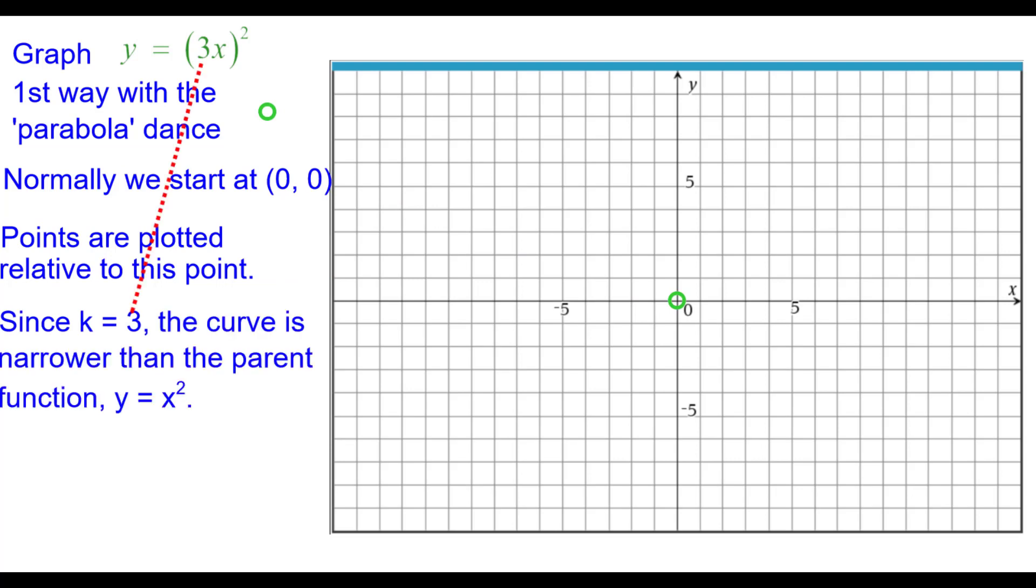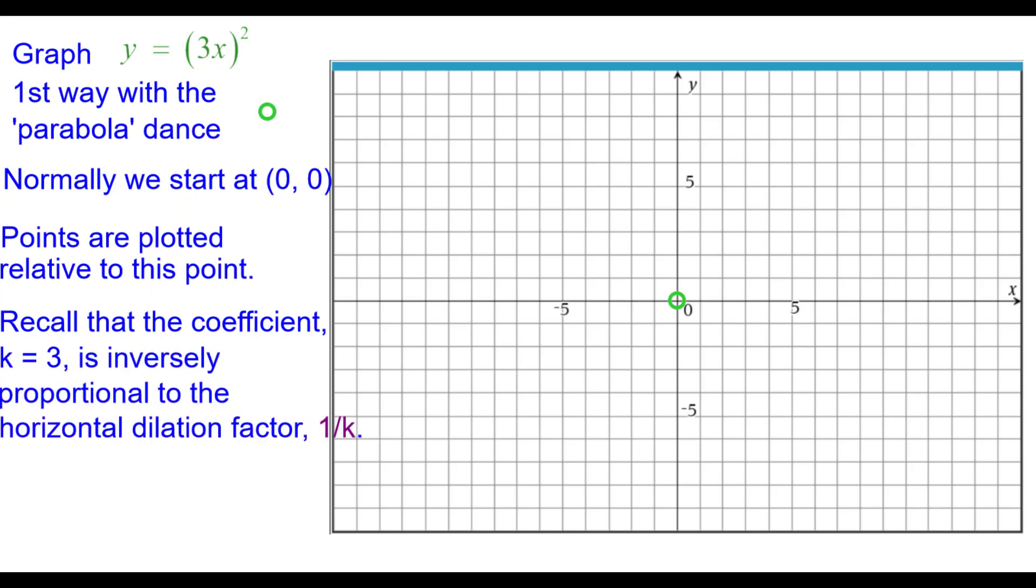Also since k equals 3, the curve is narrower than the parent function y equals x squared. And recall that the coefficient is inversely proportional to the horizontal dilation factor which is 1 over k or the reciprocal of k.